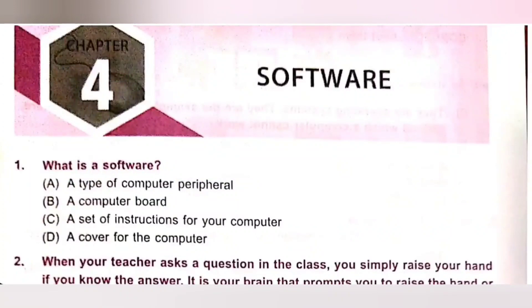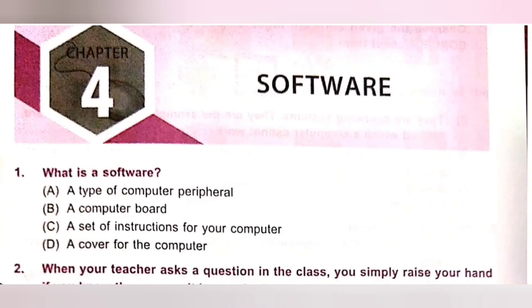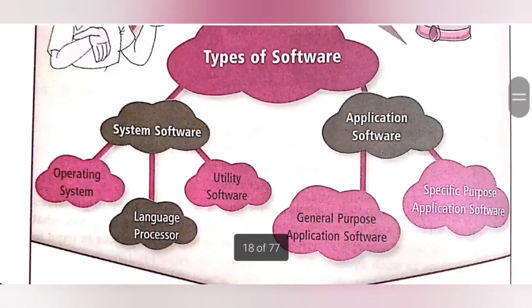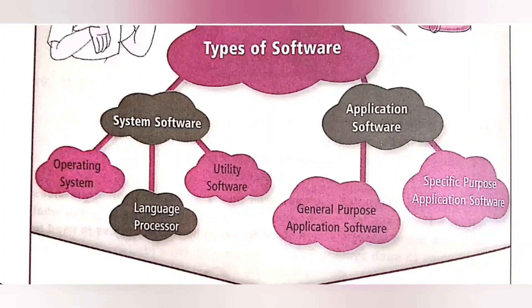In this video, we are going to see Chapter 4: Software from National Cyber Olympiad, NCO MTG workbook of class 4. Software are of 2 types: system software and application software. System software are of 3 types: operating system, language processor, and utility software. Application software are of 2 types: general purpose application software and specific purpose application software.